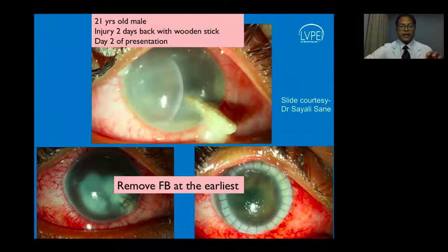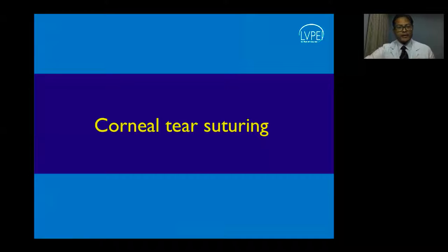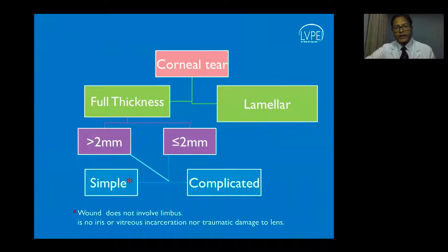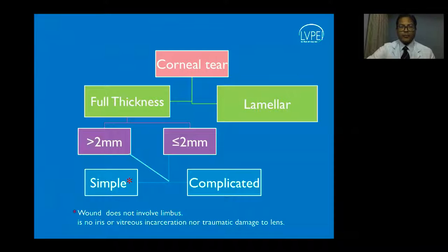When suturing corneal tears, we may be looking at full thickness or lamellar tears, small or larger tears, and simple or complicated tears. Simple tears are restricted to the cornea, well-opposed, without iris, vitreous, or lens incarcerated in them. Complicated tears may have a combination of all of these.